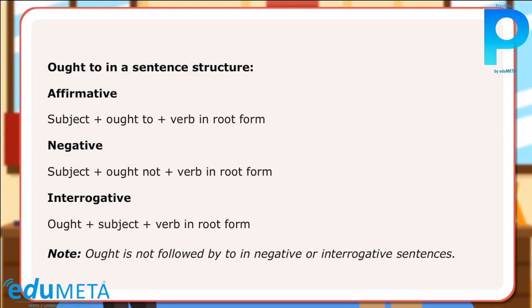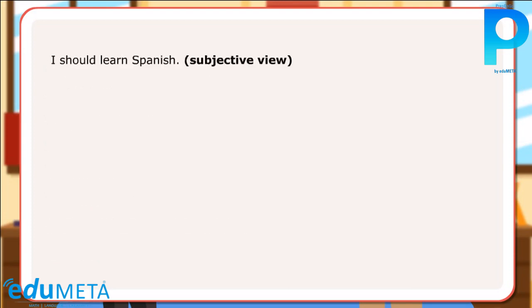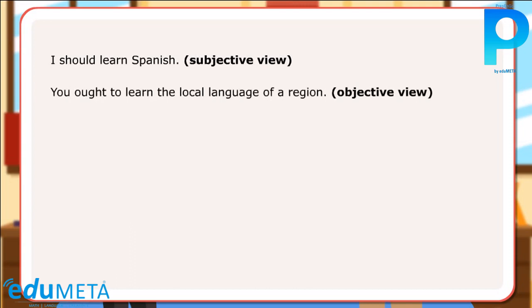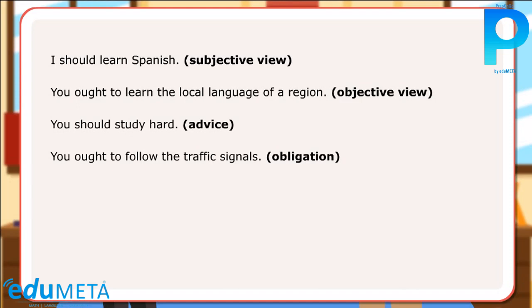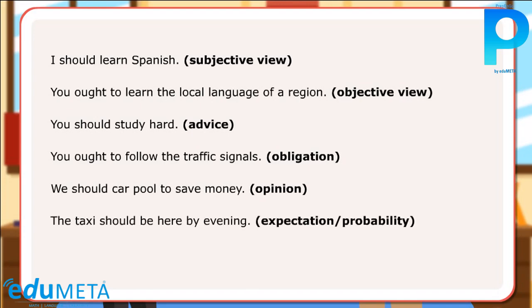Let us look at a few sentences using ought to and should: I should learn Spanish — subjective view. You ought to learn the local language of a region — objective view. You should study hard — advice. You ought to follow the traffic signals — obligation. We should carpool to save money — opinion. The taxi should be here by evening — expectation/probability. We should also install solar panels — idea.